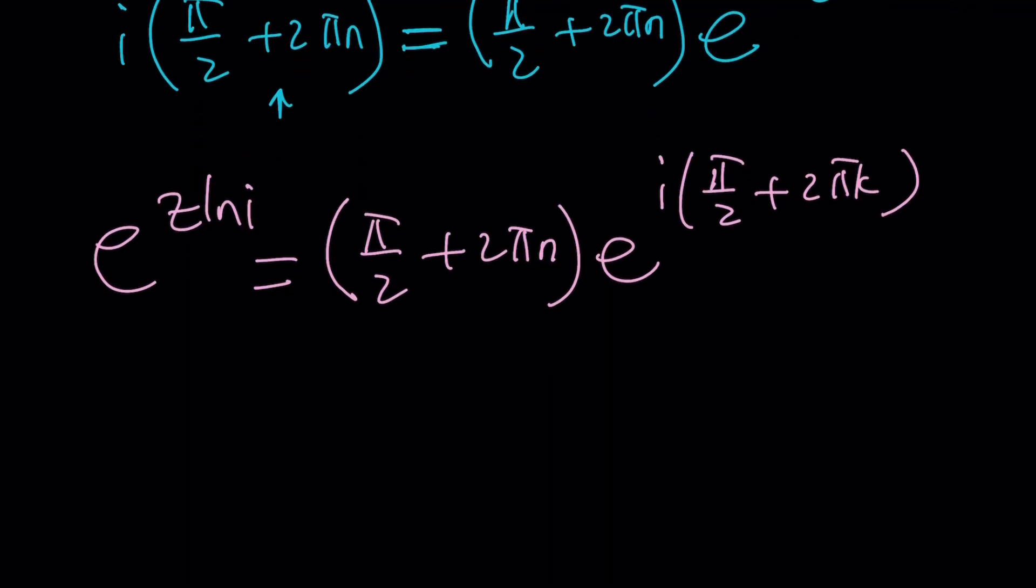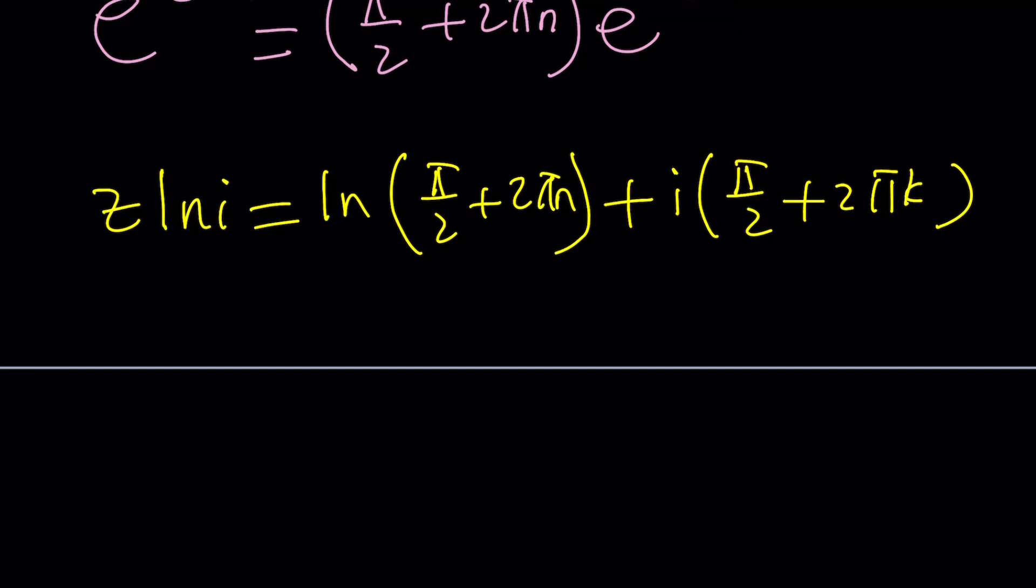Now is a good point to take the natural log. Remember the log of a complex number gives you the log of the modulus plus i times the argument. z ln i equals ln of the modulus which is pi over 2 plus 2 pi n, plus i times pi over 2 plus 2 pi k. That's quite complicated but that's a complex number. And ln i is also well known. ln i is ln 1, because its modulus is 1 which is 0, that's real, plus i times the argument which is i times pi over 2 plus 2 pi m. Every time we use an integer, m and k are all integers here.